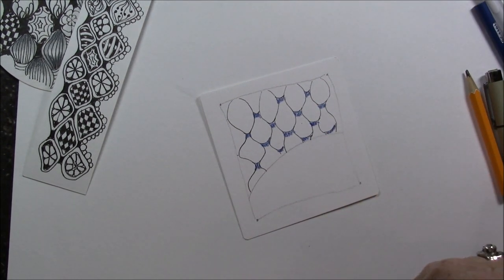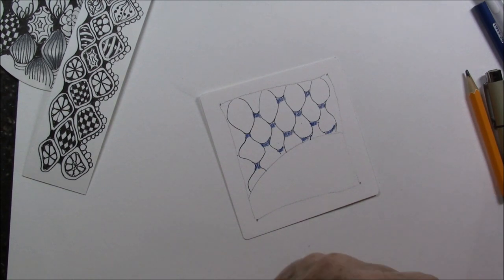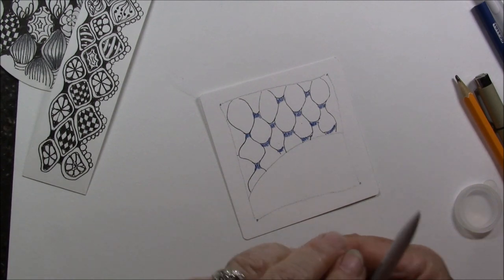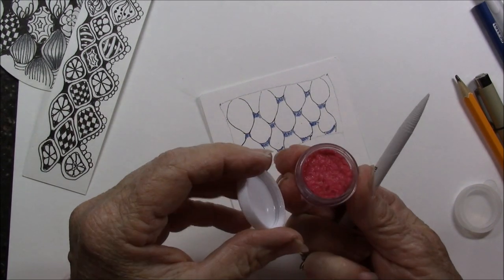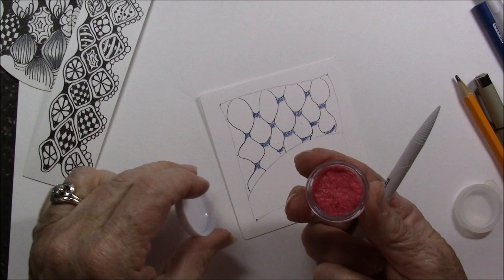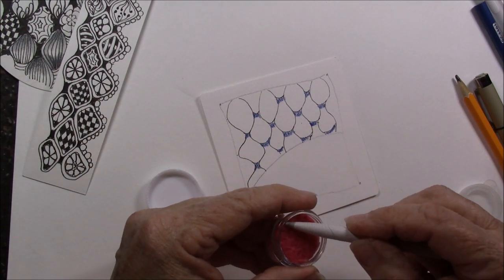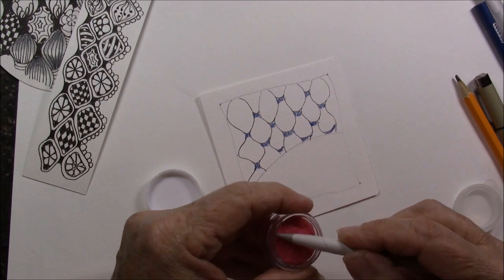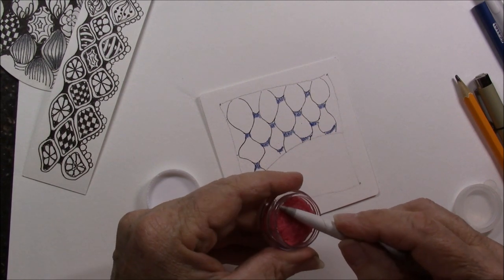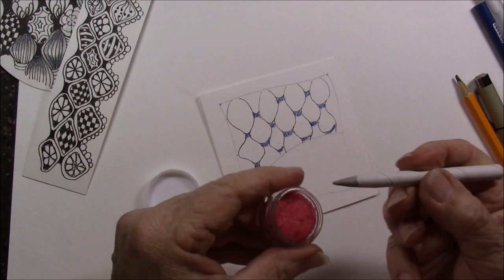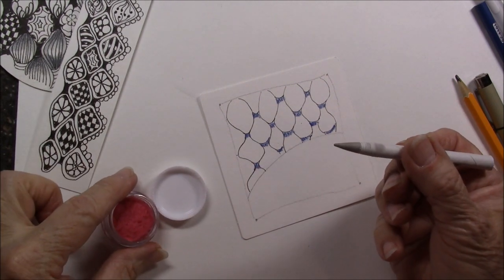Now we're going to take a shading stamp. I have a little pot here with a sponge and odorless paint thinner in it. You can get these on my website or you can make your own.